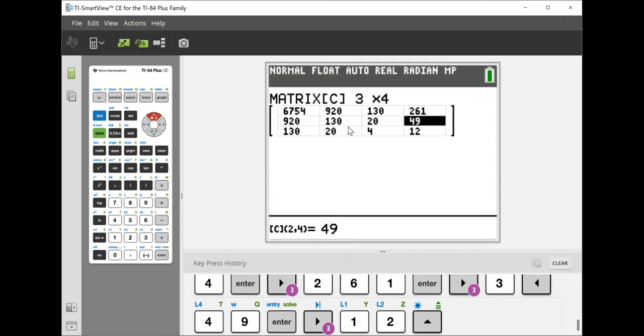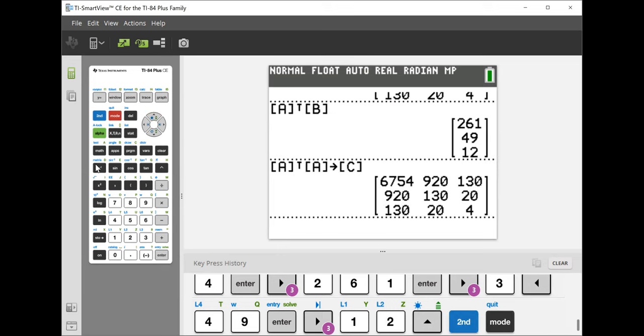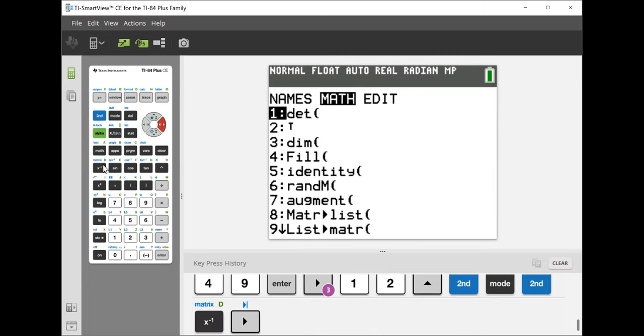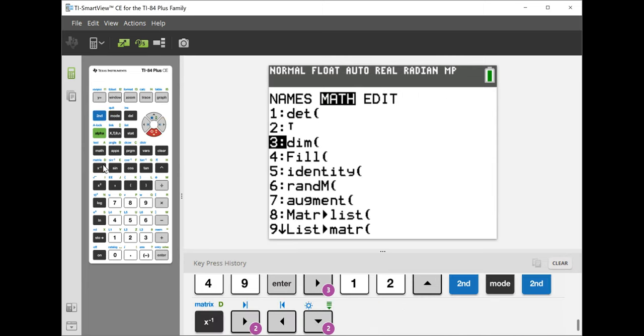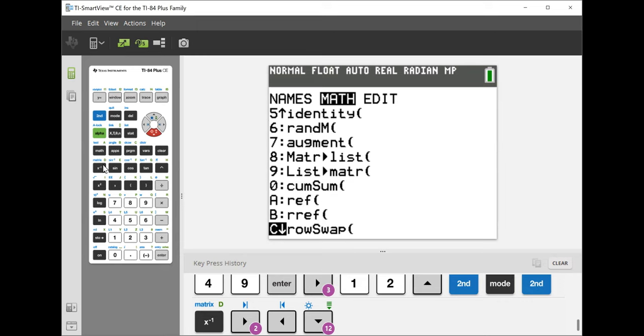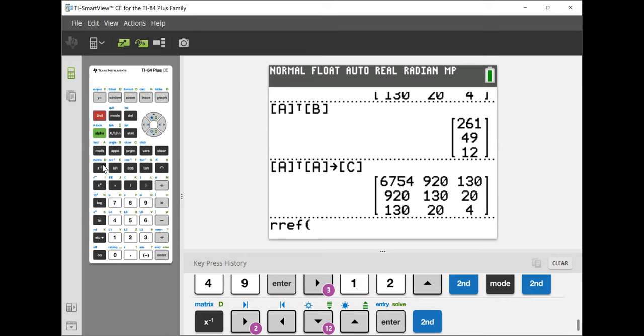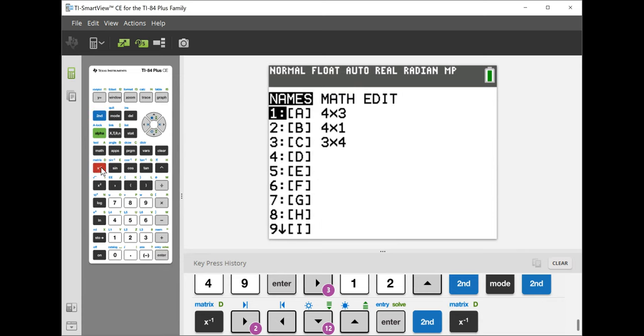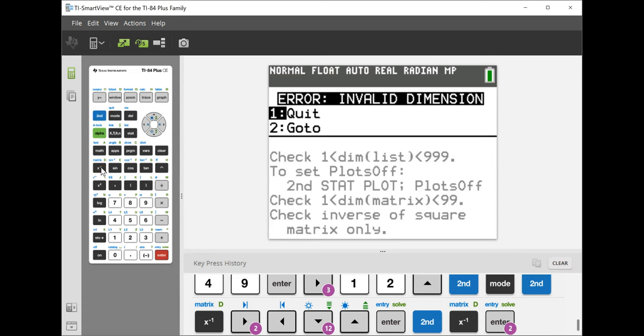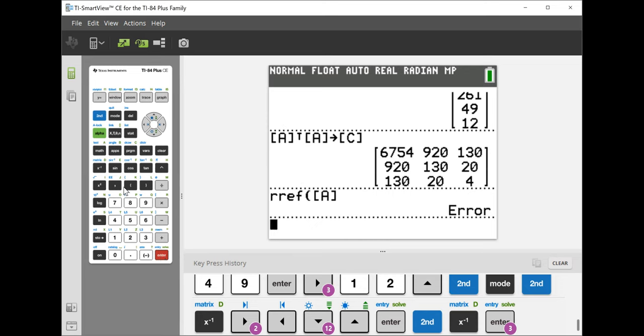I mean, I could just have entered all of these into C manually. I was just trying to save a little time. And now we perform our Gauss-Jordan Elimination.